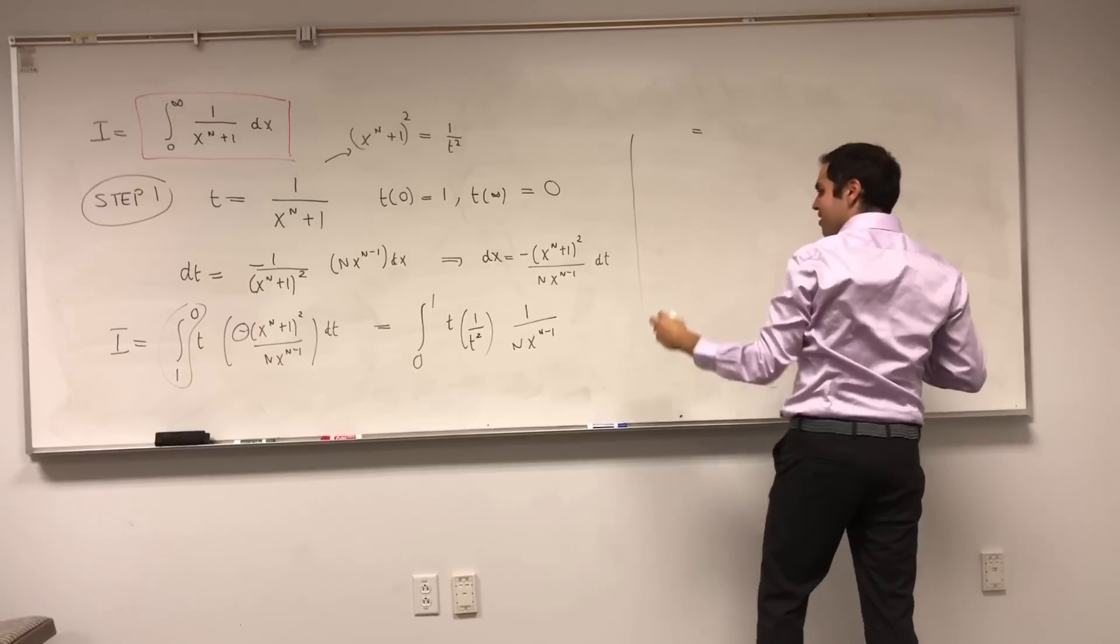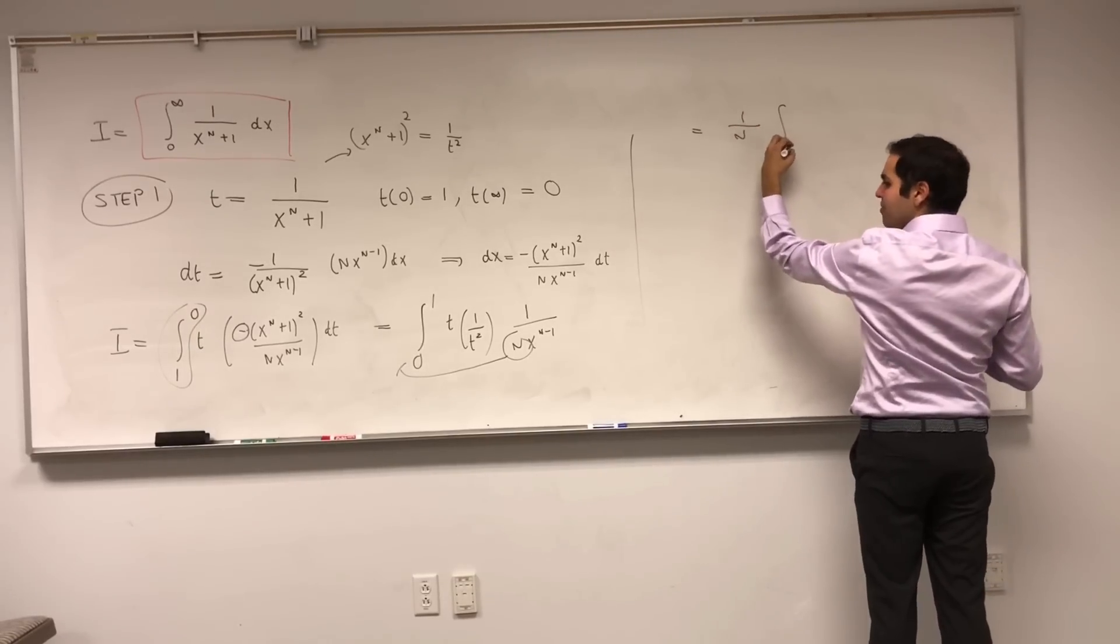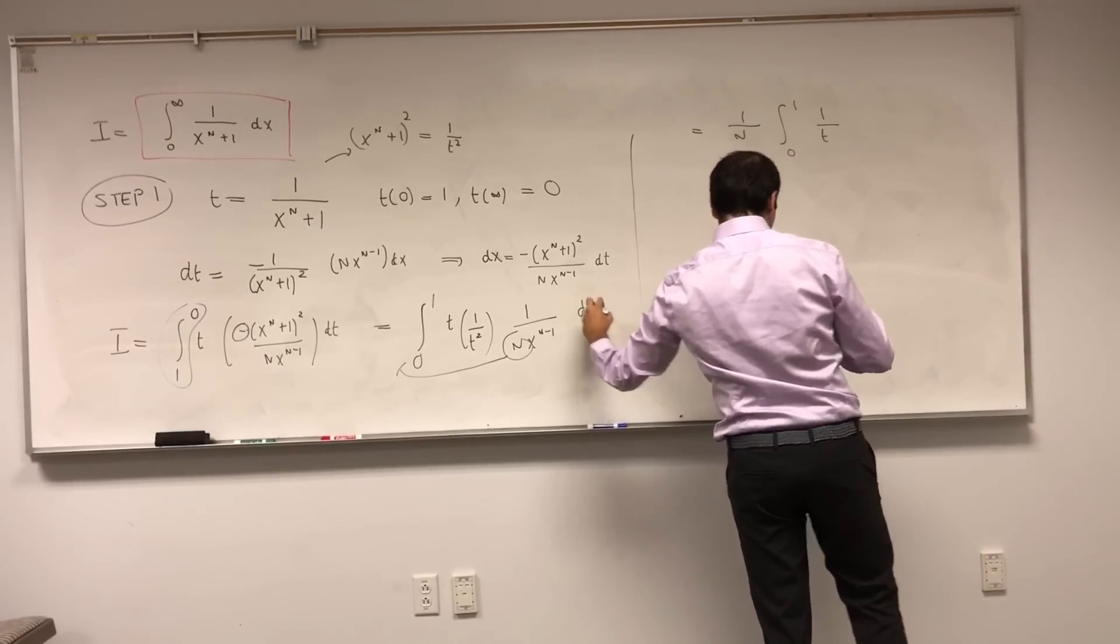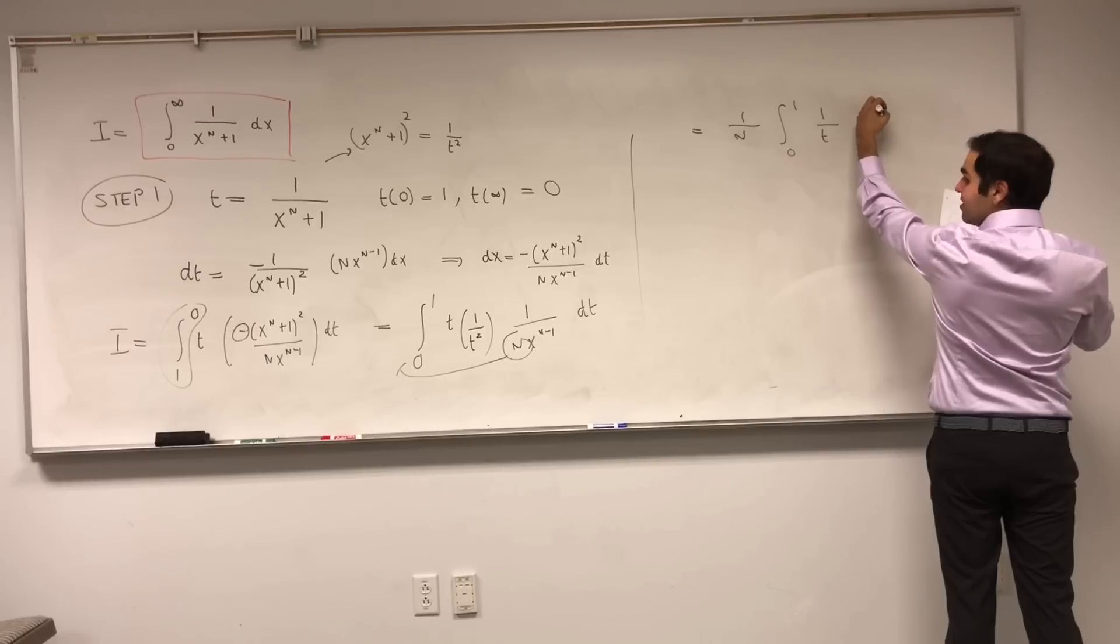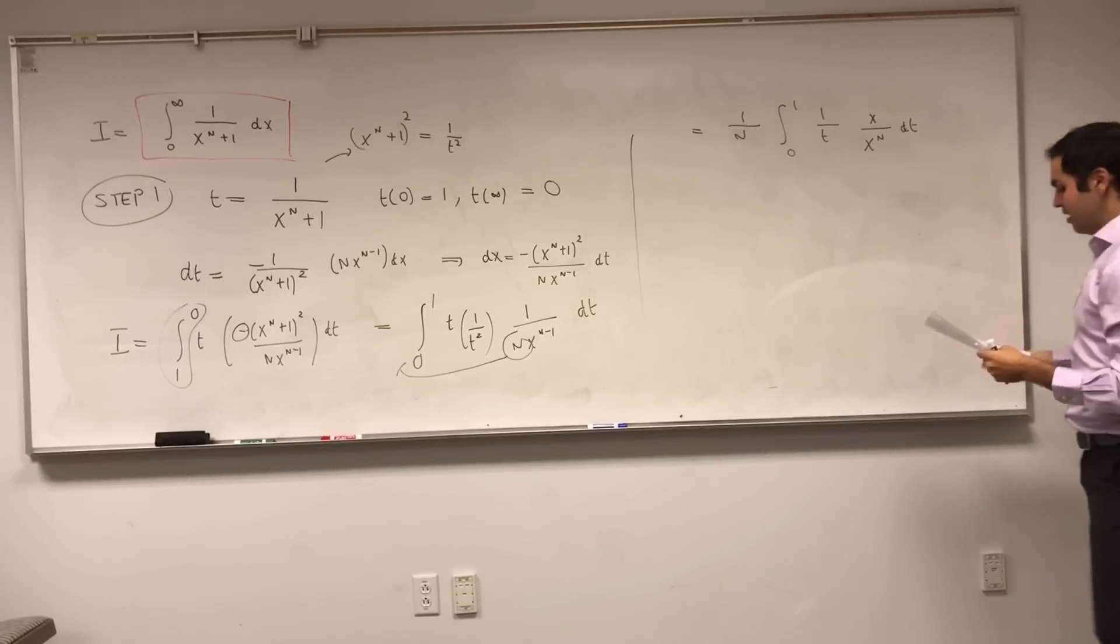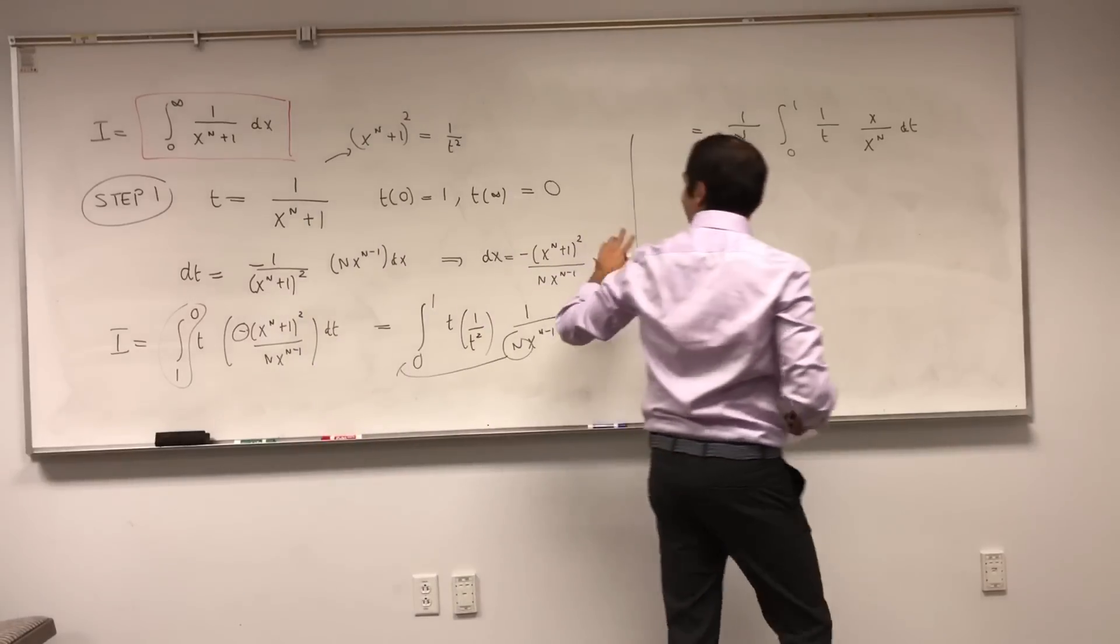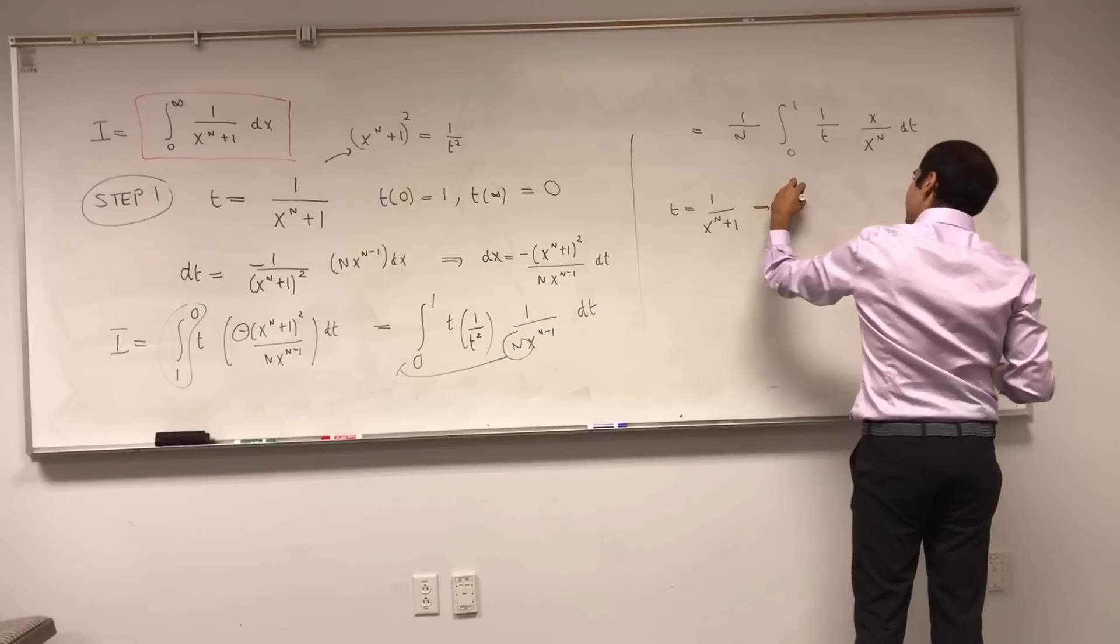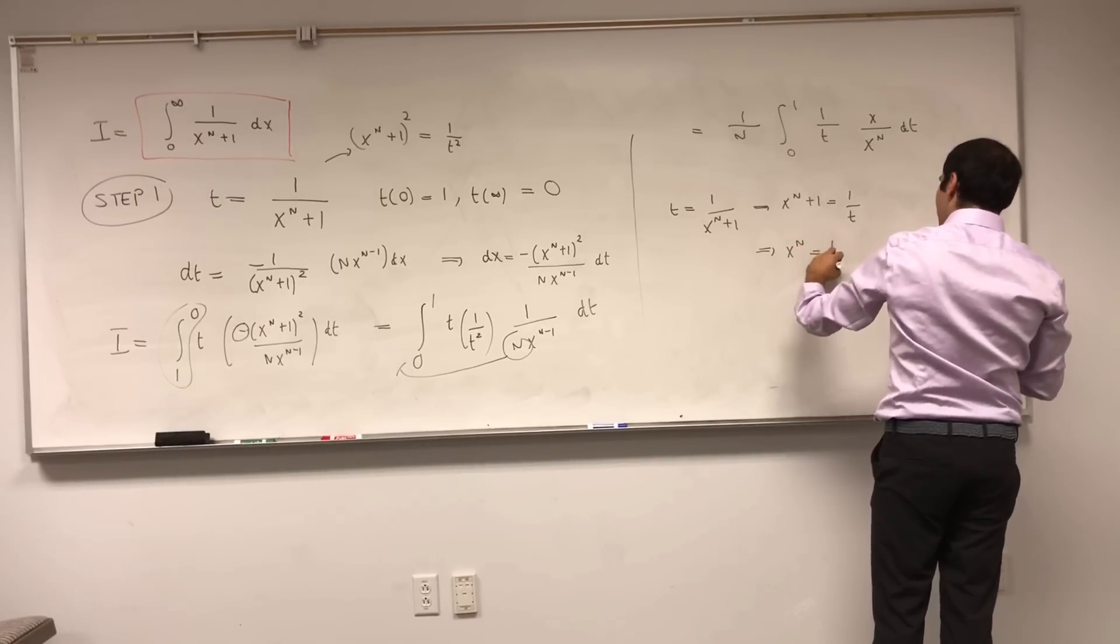So that becomes 1 over n integral from 0 to 1 of 1 over t over... Let's write 1 over x to the n minus 1 as x over x to the n dt. So t is 1 over x to the n plus 1, therefore x to the n plus 1 is 1 over t, and x to the n is 1 over t to the minus 1 over n. If you take nth roots, and remember t is between 0 and 1 and x is between 0 and infinity, x becomes the nth root of that.